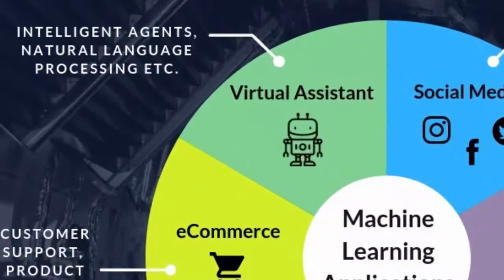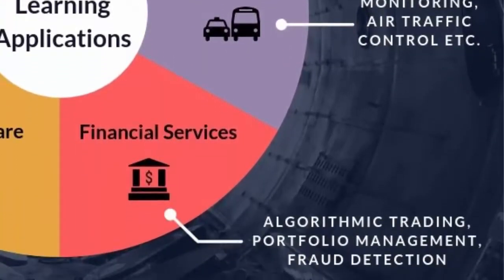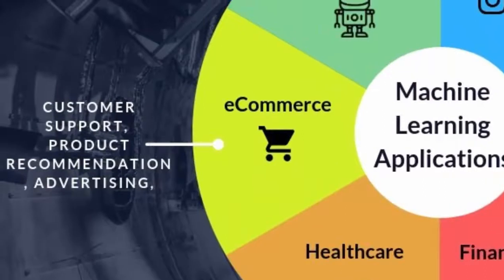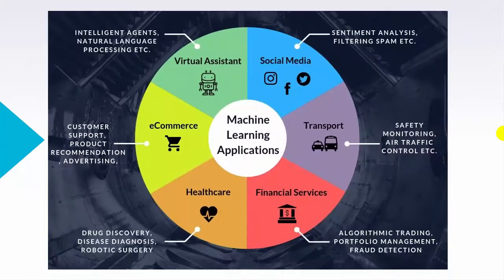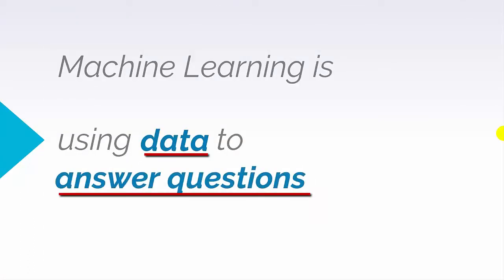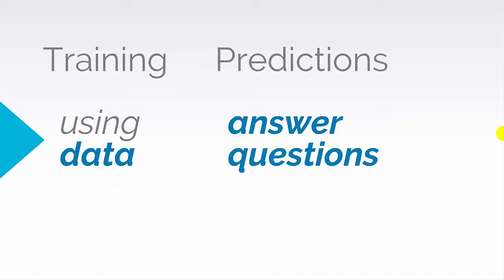As we use machine learning to make human tasks better, faster, and easier than before, we can also look further into the future when machine learning can help us do tasks we never could have achieved on our own. For our purposes, the definition of machine learning comes down to just five words: using data to answer questions. We can split this definition into two parts — 'using data,' which we refer to as training, and 'answering questions,' which refers to making predictions.